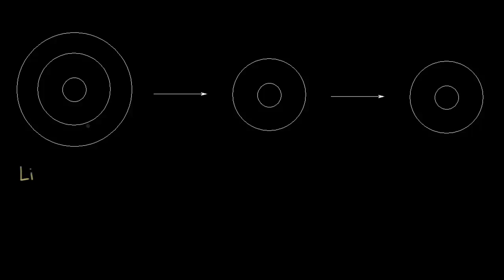Lithium has an atomic number of three, so there are three protons in the nucleus. In a neutral atom of lithium, the number of electrons equals the number of protons, so there are three electrons in lithium. The electron configuration is 1s2 2s1. We have two electrons in the 1s orbital, and then one more electron goes into the 2s orbital. That gives us a simple picture of the neutral lithium atom.